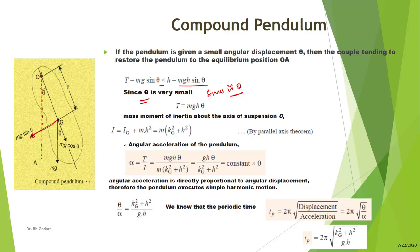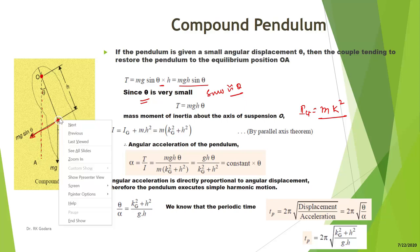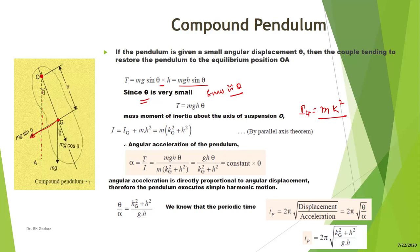The mass moment of inertia about the axis passing through the center of gravity G is I_G = mk², where k is the radius of gyration. Applying the parallel axis theorem, the mass moment of inertia about the point of suspension O is I_O = I_G + mh² = m(k² + h²).